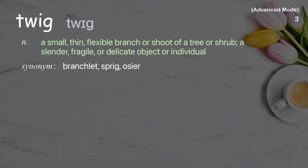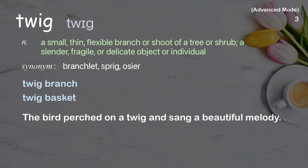Twig. A small, thin, flexible branch or shoot of a tree or shrub; a slender, fragile, or delicate object or individual. Examples: The bird perched on a twig and sang a beautiful melody.